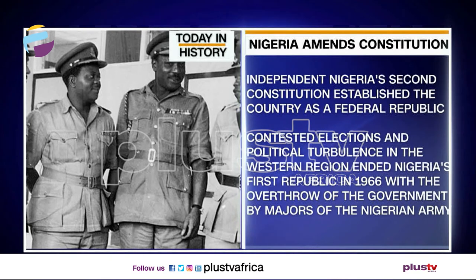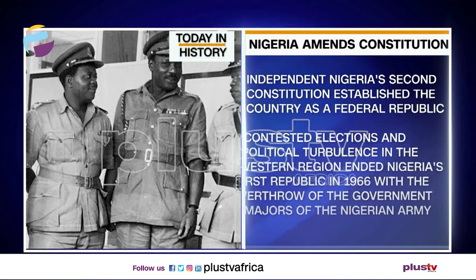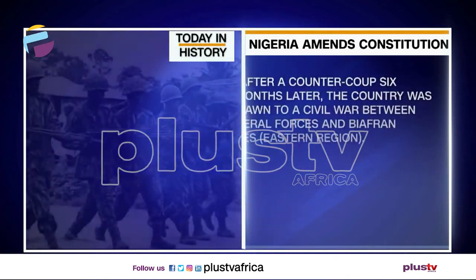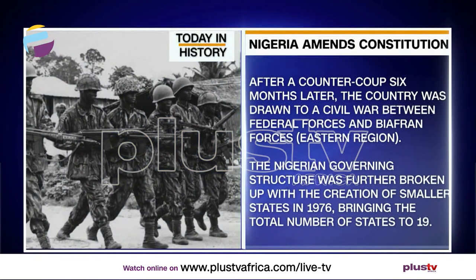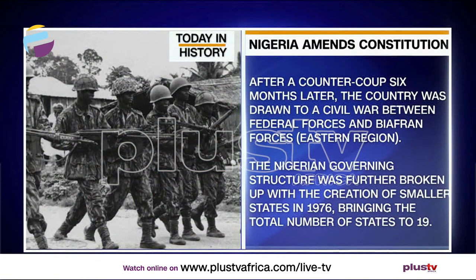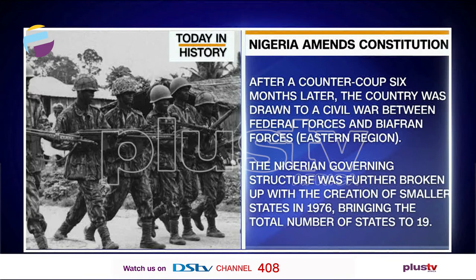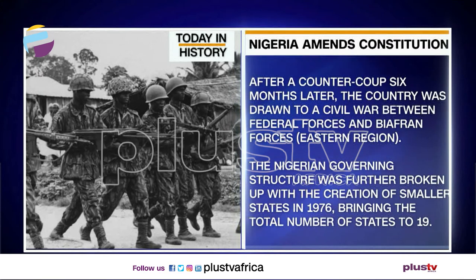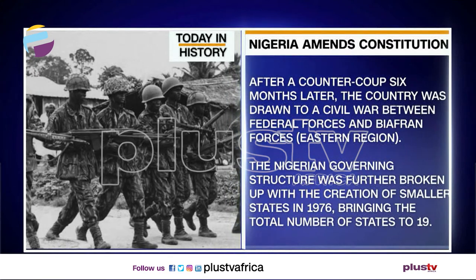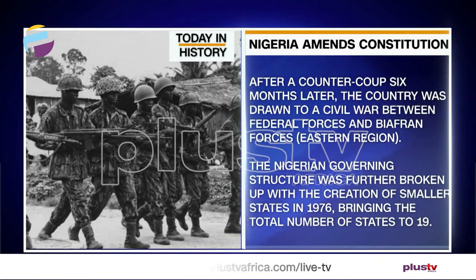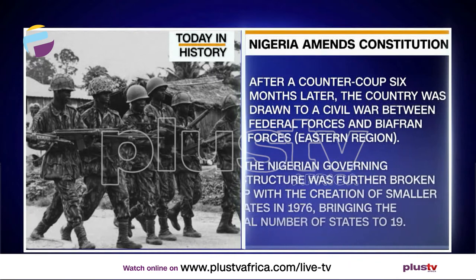The establishment of the second constitution established the country as a federal republic, coming into force first on the 1st of October 1963 — the third anniversary, which we continue to celebrate as the day Nigeria became an independent nation. The 1963 constitution was based on the Westminster system and continued in operation until the 1966 coup.